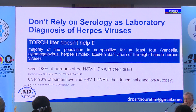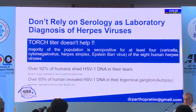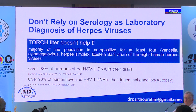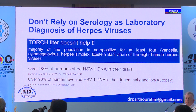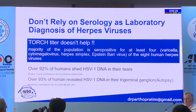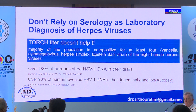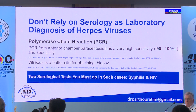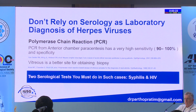This is very important: do not rely on serology as a laboratory diagnosis for herpes viruses. TORCH titers are not going to solve your problem. Studies show 92% of humans shed HSV-1 DNA in their saliva, and 93% of human autopsies revealed HSV-1 DNA in the trigeminal ganglion. The polymerase chain reaction (PCR) remains the mainstay of diagnosis. The only two serological tests useful in herpetic uveitis are to rule out CMV IgM and HSV.